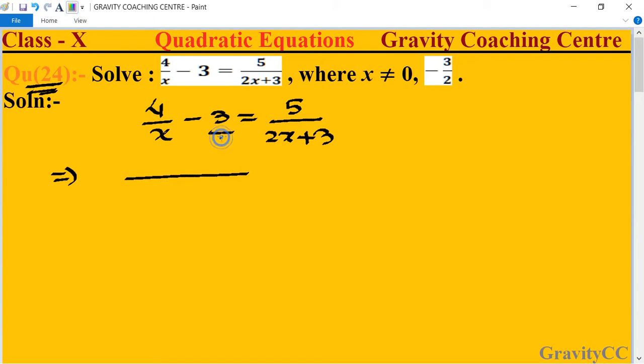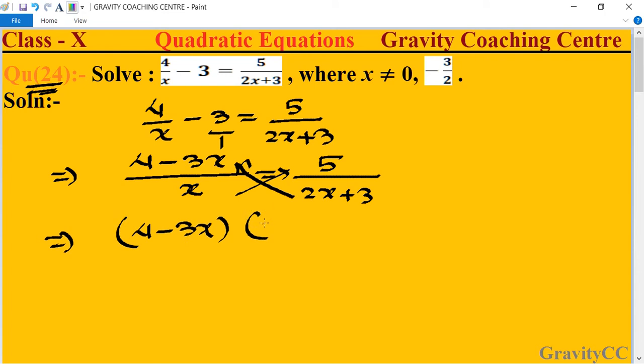Taking the equation, 4/(x-3) = 5/(2x+3), we can write this as (4-3x)/1 = 5/(2x+3). Now we use cross multiplication. After cross multiplication, we get (4-3x)(2x+3) = 5x.